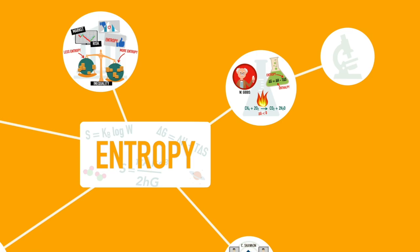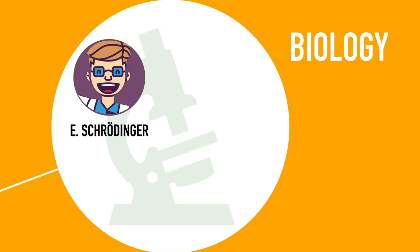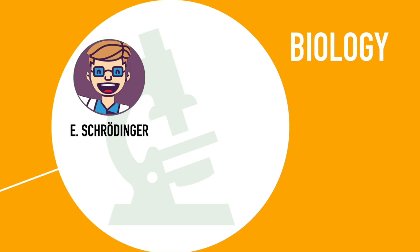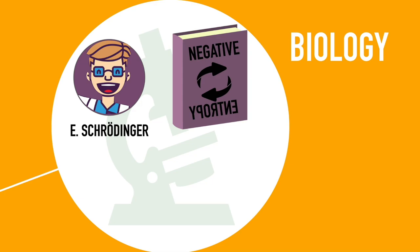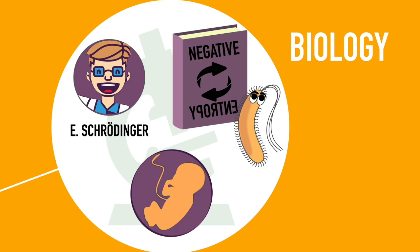In the mid-20th century, entropy made its debut in biology. In 1944, Erwin Schrödinger introduced the idea of negative entropy. In his book, Schrödinger argues that life is the nemesis of entropy, in the sense that living organisms constantly struggle to decrease their level of inner disorder. The birth of a child is a typical example of how nature reduces its level of disorder. To create order out of chaos and maintain their complex organization, living systems need to export entropy to their environment, while simultaneously importing energy to decrease their own entropy.